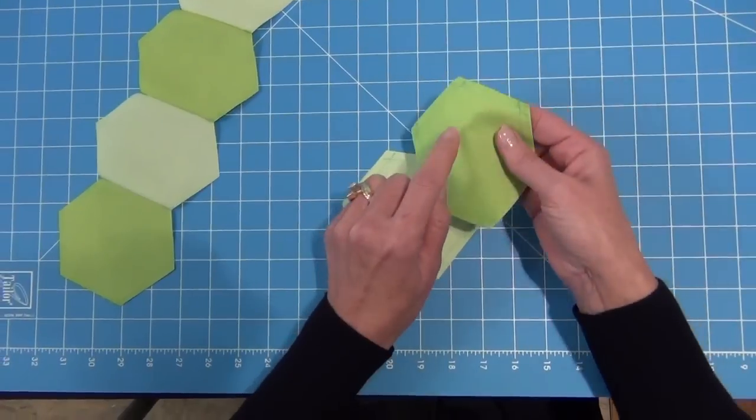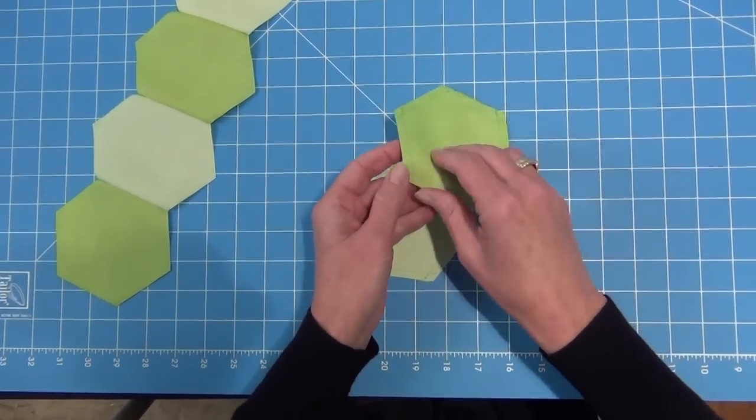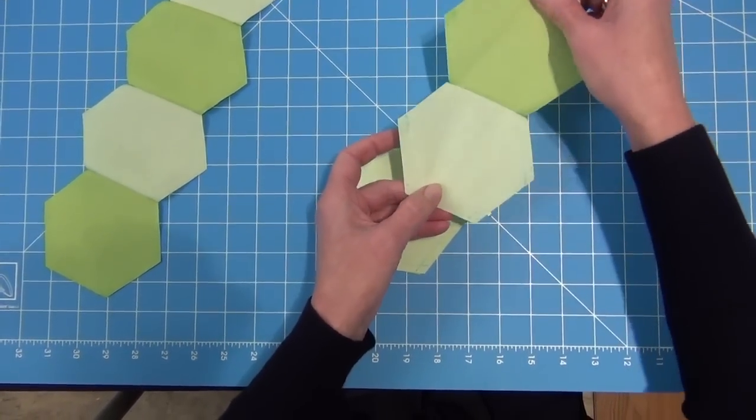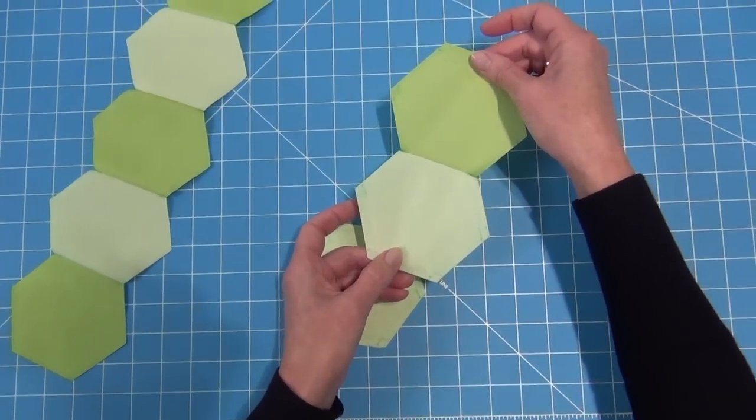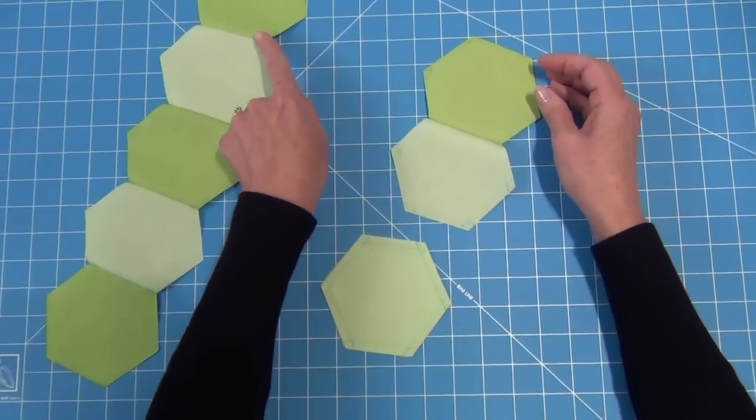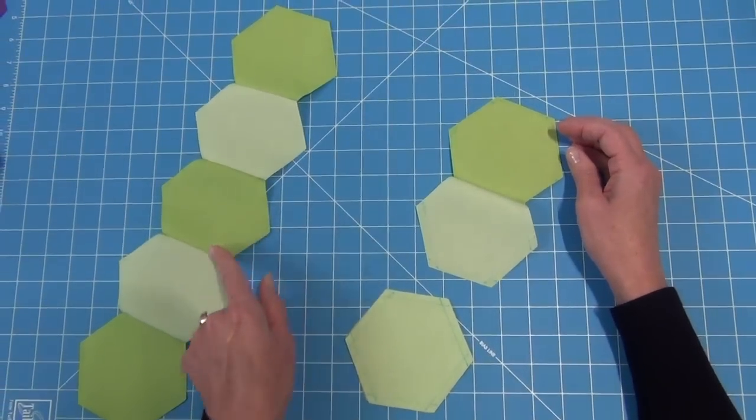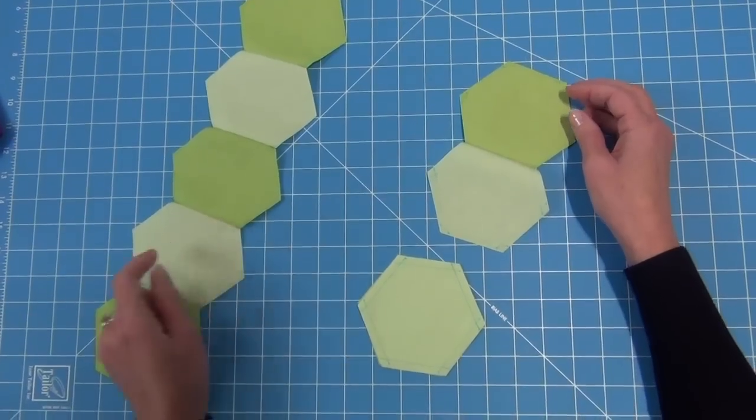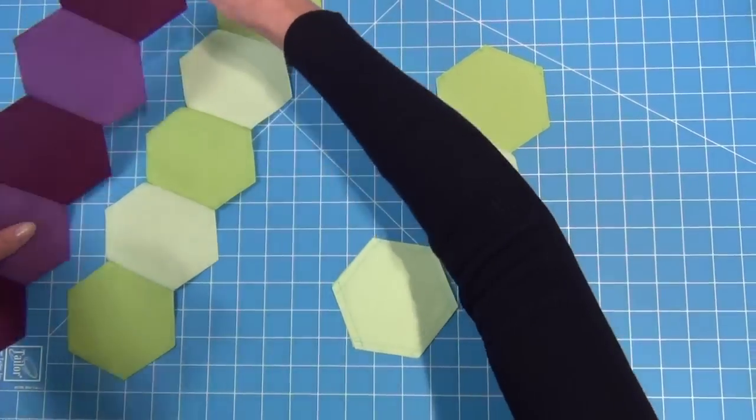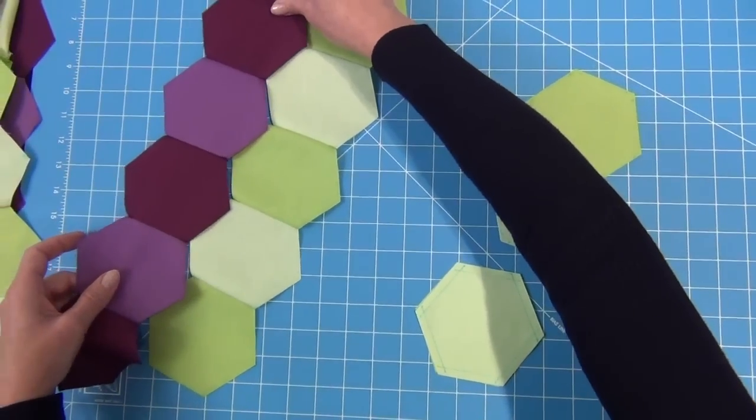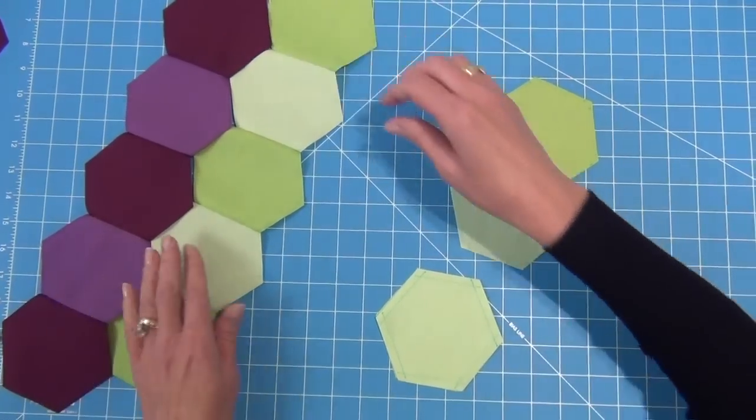So that's what this looks like. You can see our stitching line right along here. And when I open that up, you'll have your first two hexagons sewn together. Continue on in that same manner until you have an entire row done, like this. The next step is you're going to sew your second row, and then we're going to piece those two rows together.